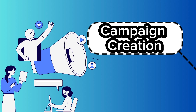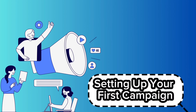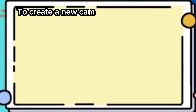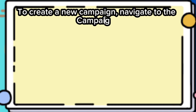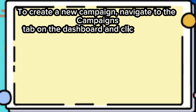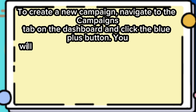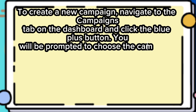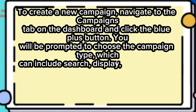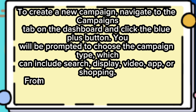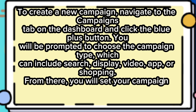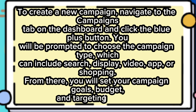Campaign creation. Setting up your first campaign. To create a new campaign, navigate to the Campaigns tab on the dashboard and click the blue plus button. You will be prompted to choose the campaign type, which can include search, display, video, app, or shopping. From there, you will set your campaign goals, budget, and targeting options.